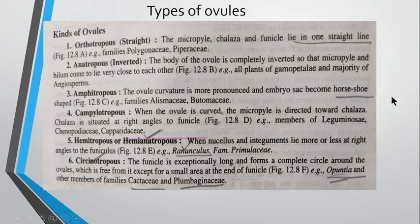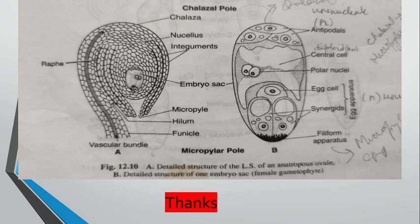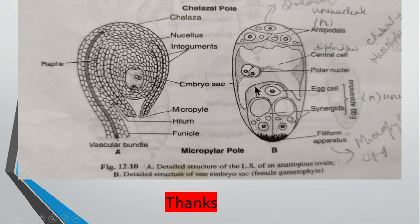Inside the nucellus tissue, the ovule is present and it shows the formation of the embryo sac through the process of megasporogenesis and megagametogenesis. In the next video we will discuss megasporogenesis and megagametogenesis, where a megaspore is formed and gets converted into the female gametophyte — the embryo sac. This video was just for the structure of the ovule and the types of ovule. Thanks.